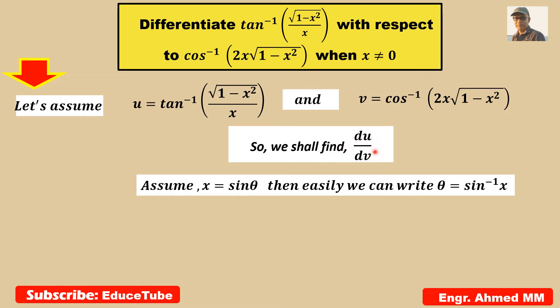So surely we have to find du by dv — that is our target. So first we will assume x equal to sin theta. Even here I could assume cos theta; it will give the same results. So let's assume sin theta. Then easily we can write theta equal to sin inverse x.